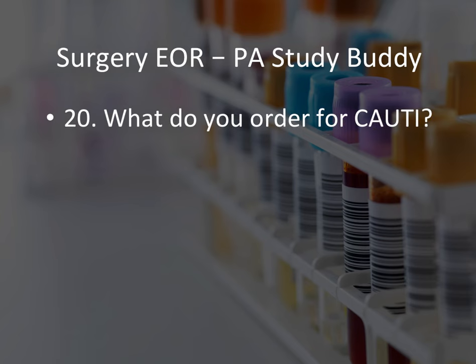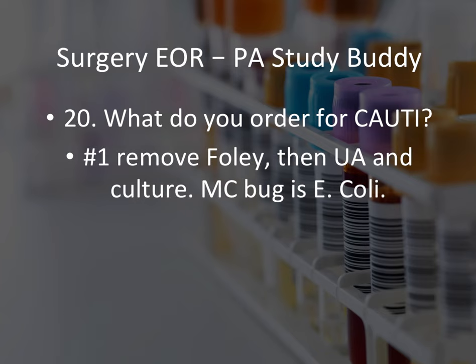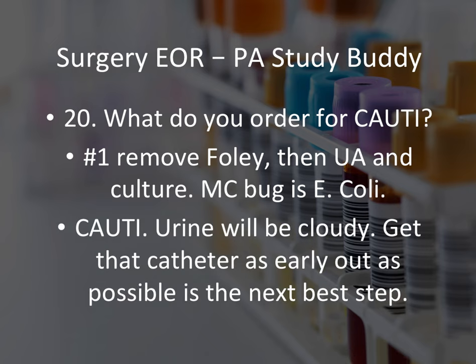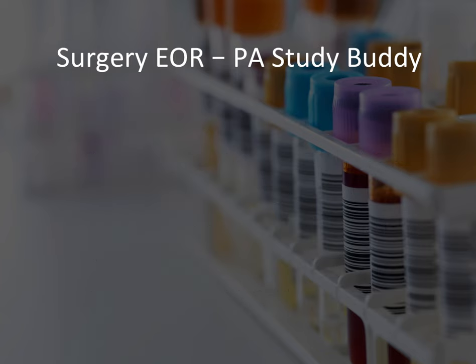What do you order for CAUTI? First, remove the Foley, then get UA and cultures. The most common bug is E. coli. CAUTI is something patients develop during their hospital stay — if the Foley stays in place more than three days the patient is at increased risk. Remove the Foley first, then get urine analysis and cultures. If asked the next best step in treatment of CAUTI, the answer is removal of the Foley catheter.